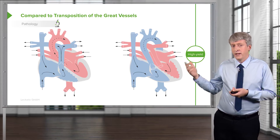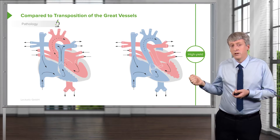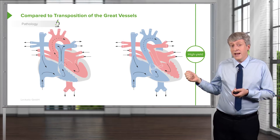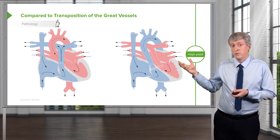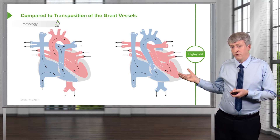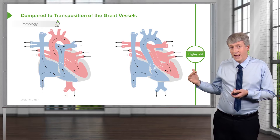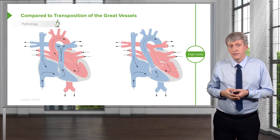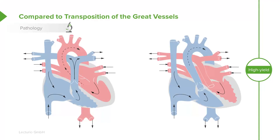Blood then comes back from the pulmonary vein into the left atrium, the left ventricle, and out the aorta to the body. In a patient with transposition of the great vessels, these two main vessels have switched, which creates two parallel circulations.